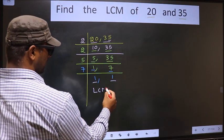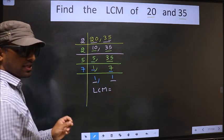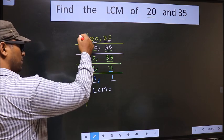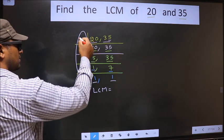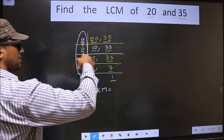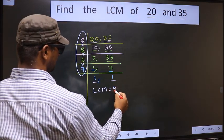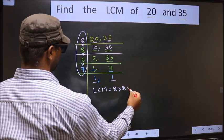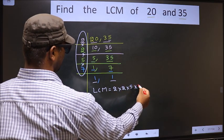So our LCM is, LCM is the product of these numbers. Product of these numbers, that is 2 into 2, into 5, into 7.